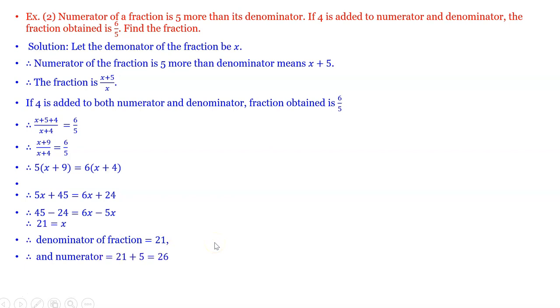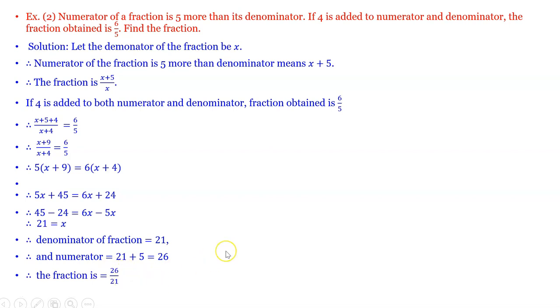The numerator is 5 more than the denominator, therefore 21 plus 5 is equal to 26. Therefore our required fraction is 26 upon 21.